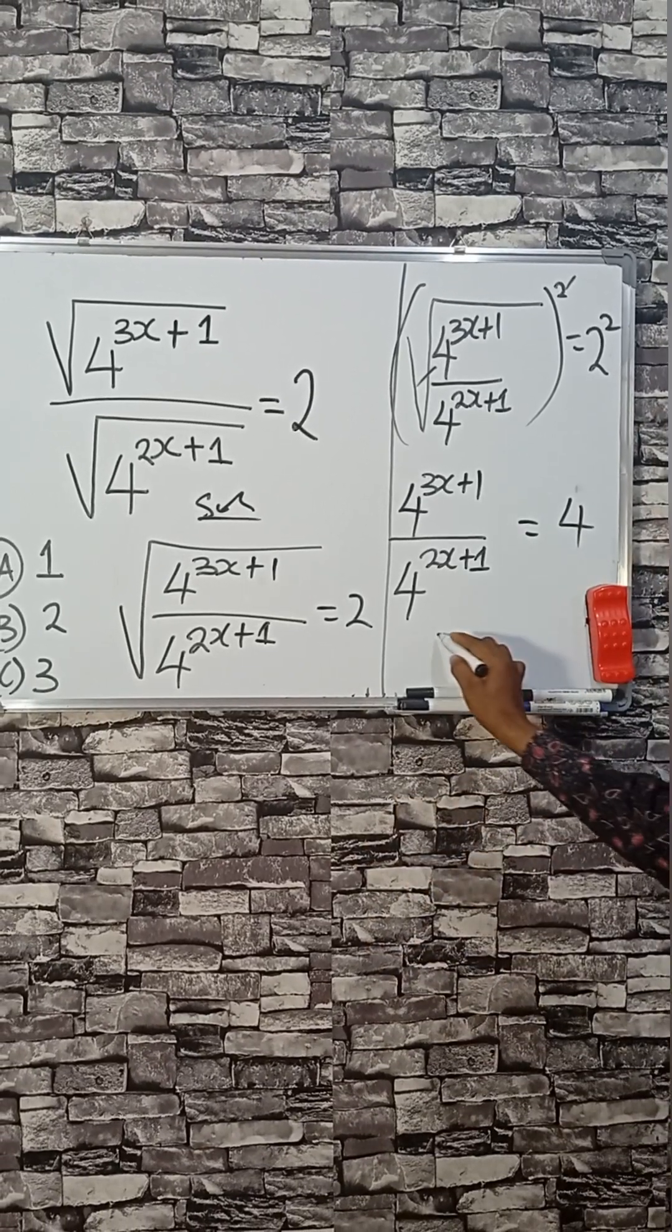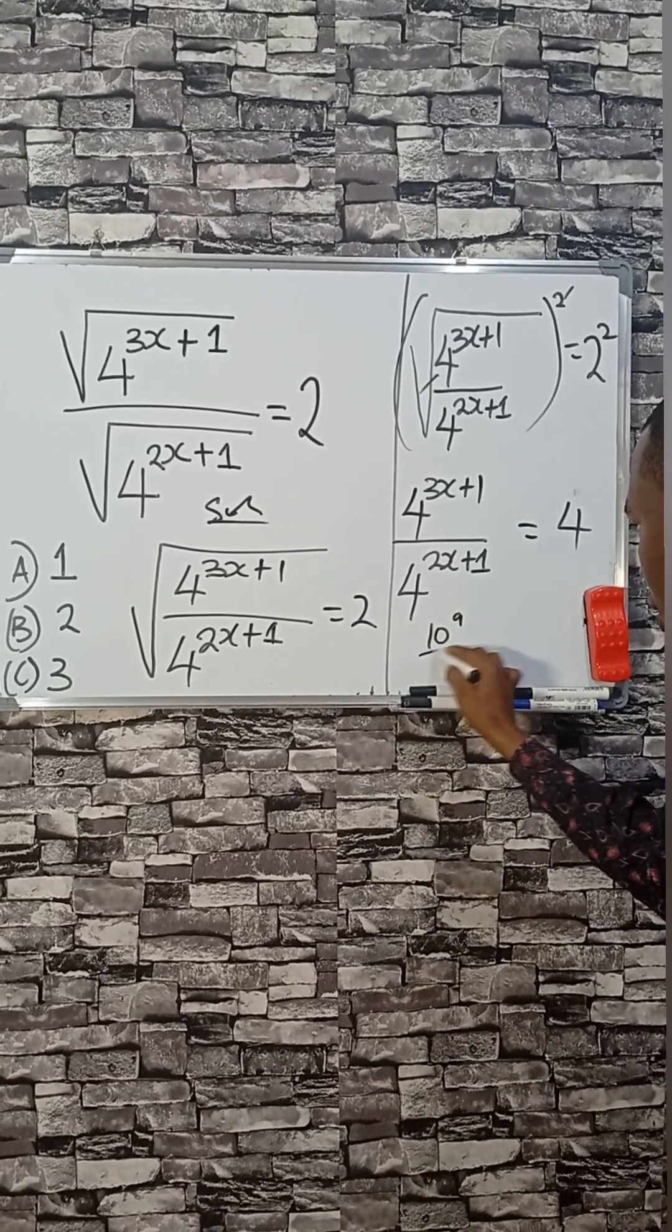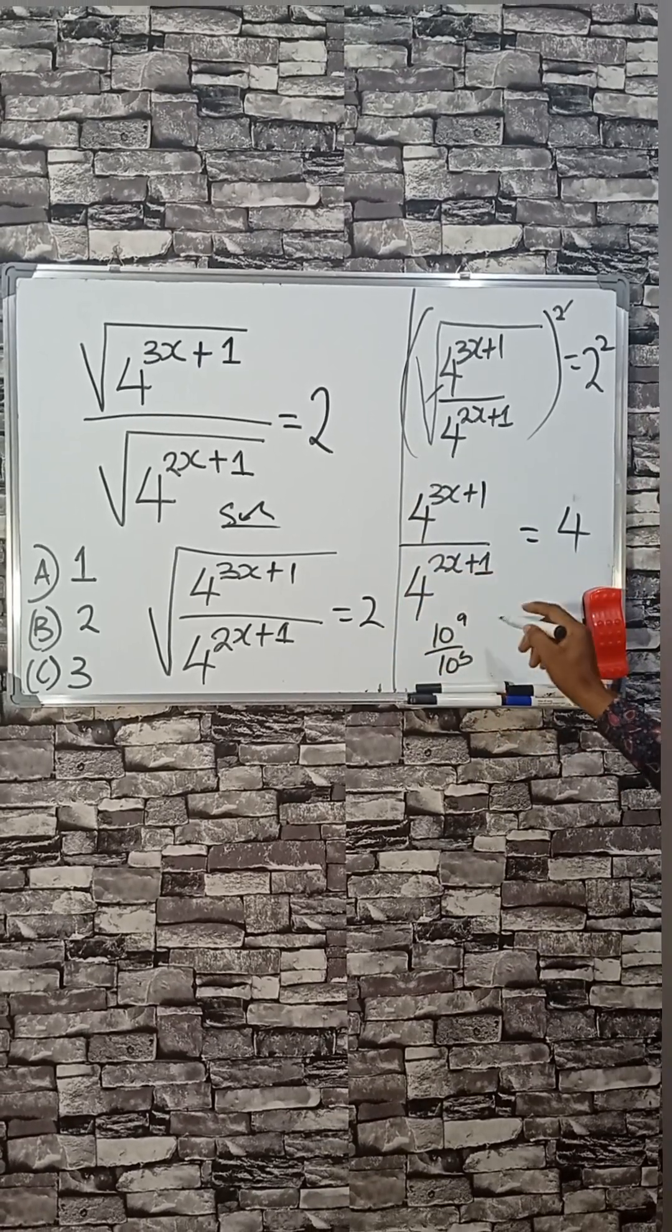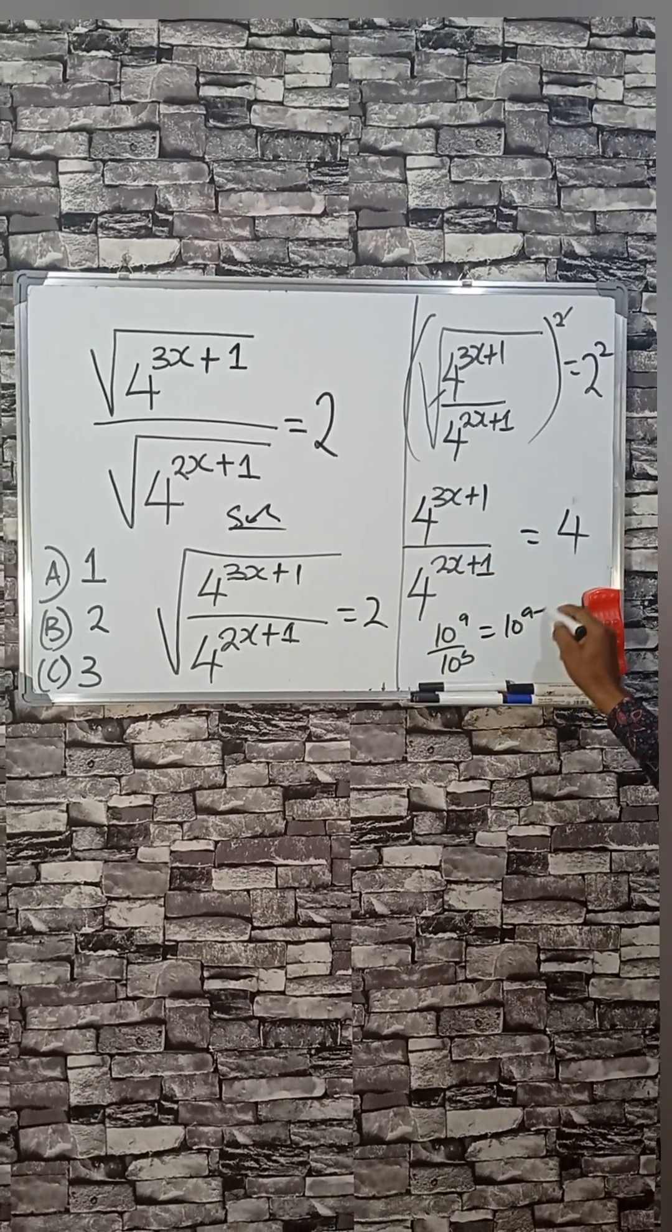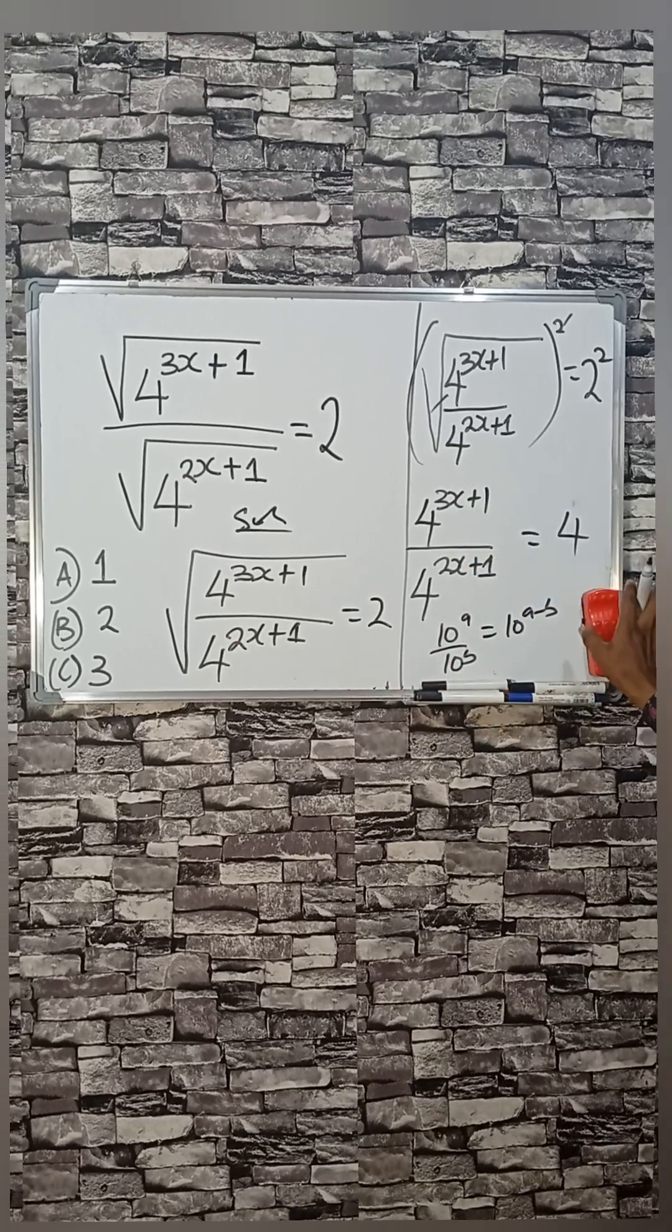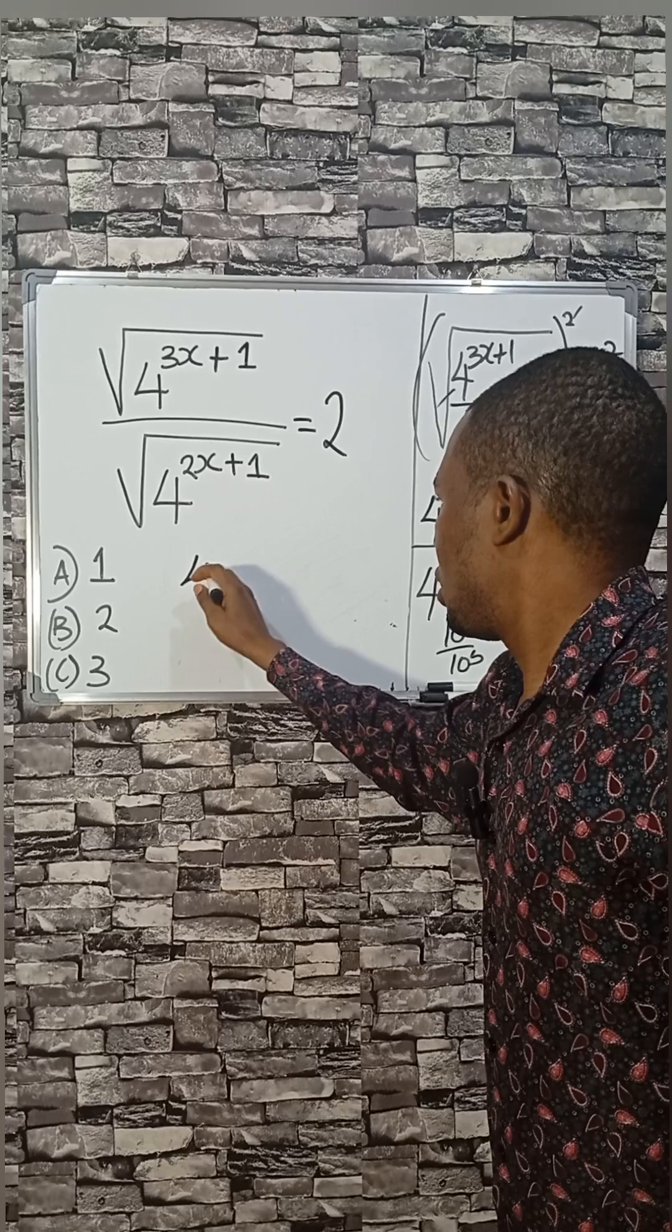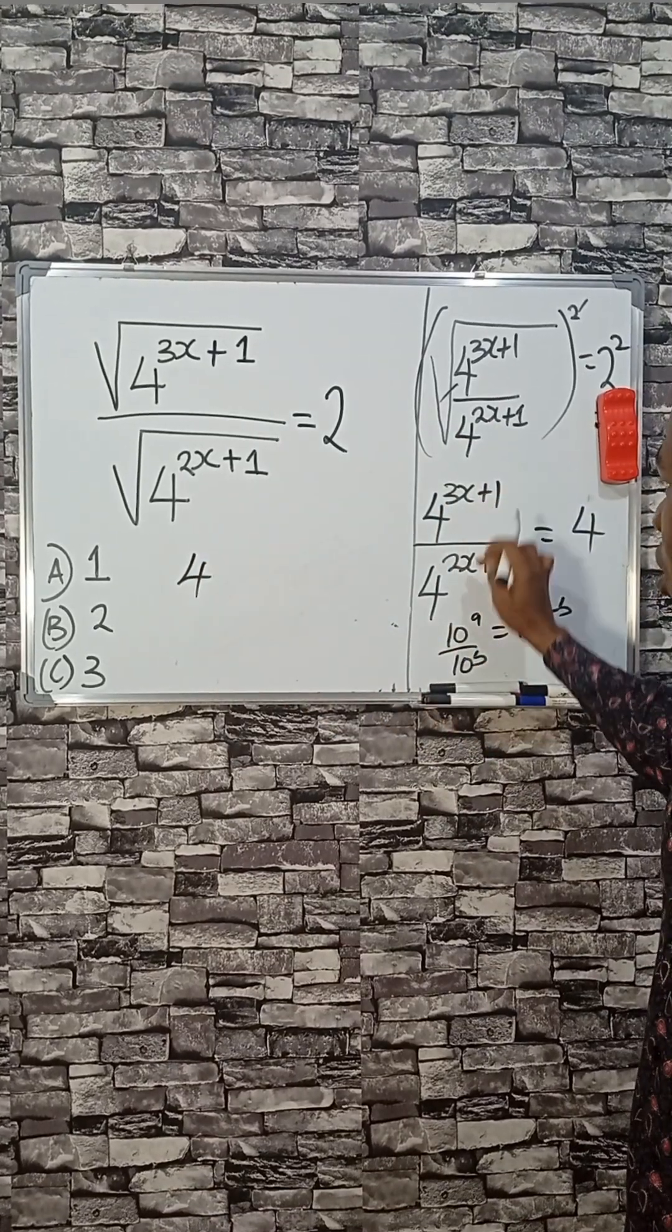Now, from indices, if we have 10 raised to the power A divided by 10 raised to the power B, as much as I have the same base, you can subtract the powers. So, we are separating the powers here. I have to clean this place. Now, here, I'm applying this law here. I'll subtract these powers. So, the base is the same.